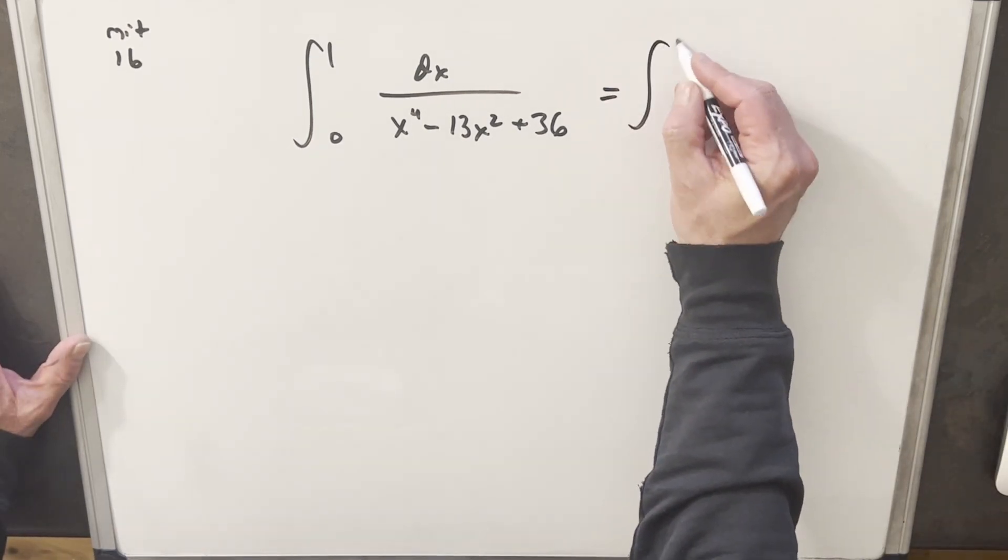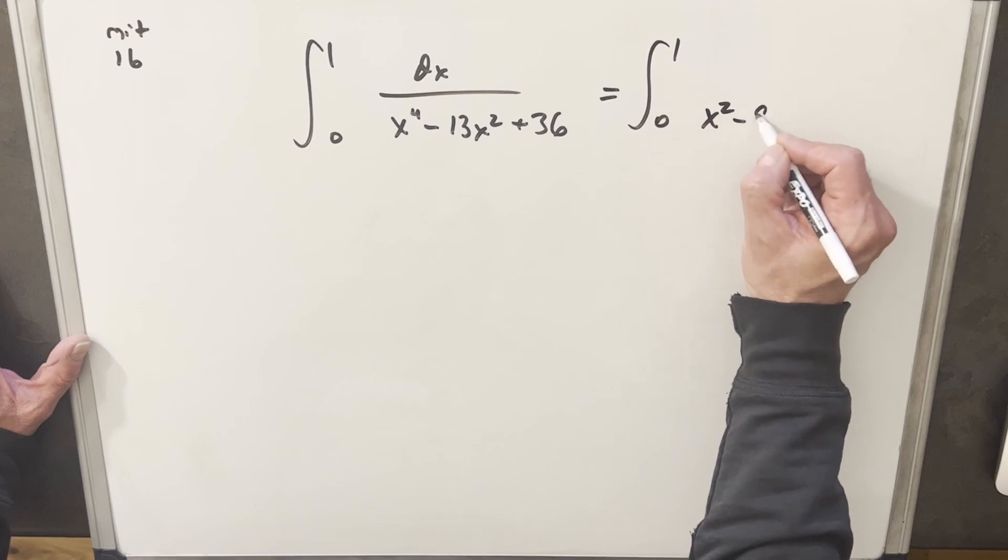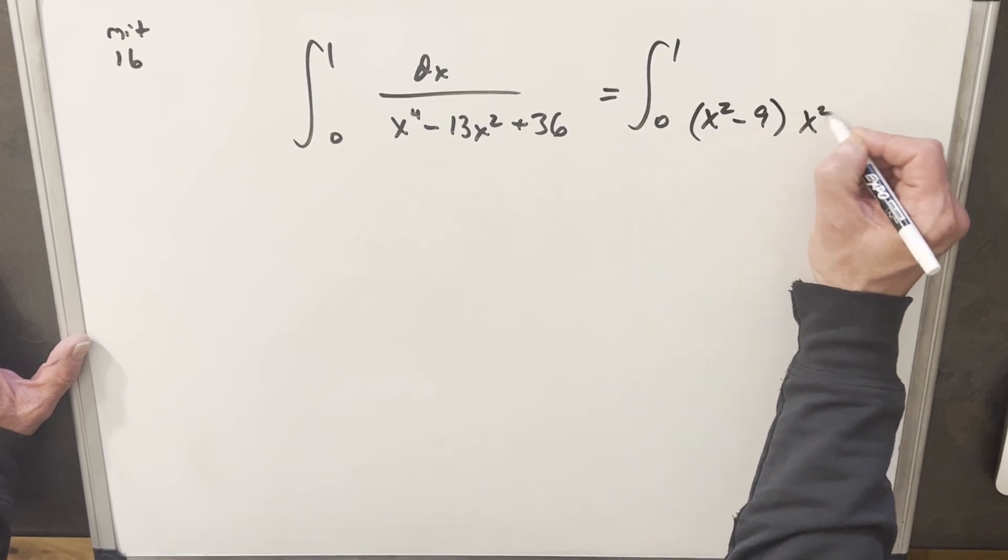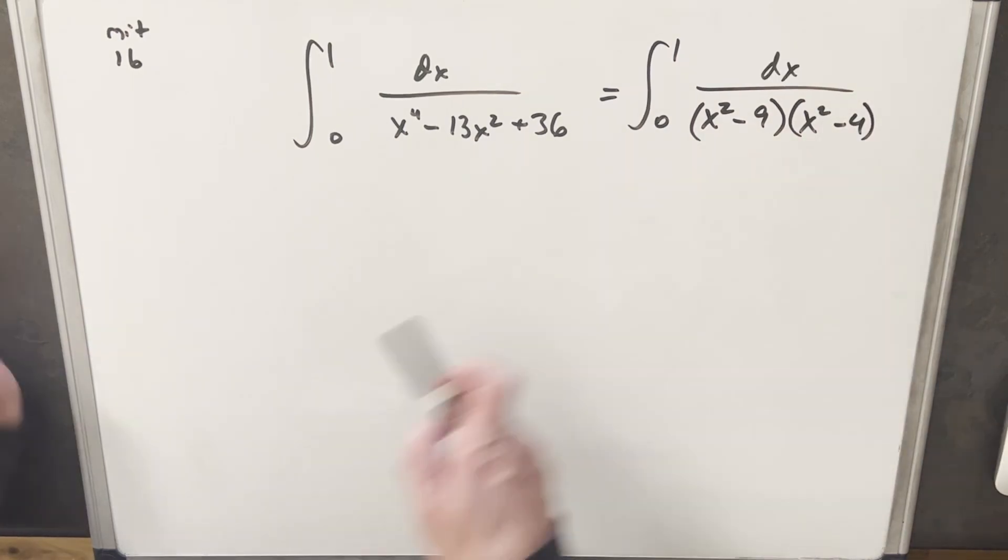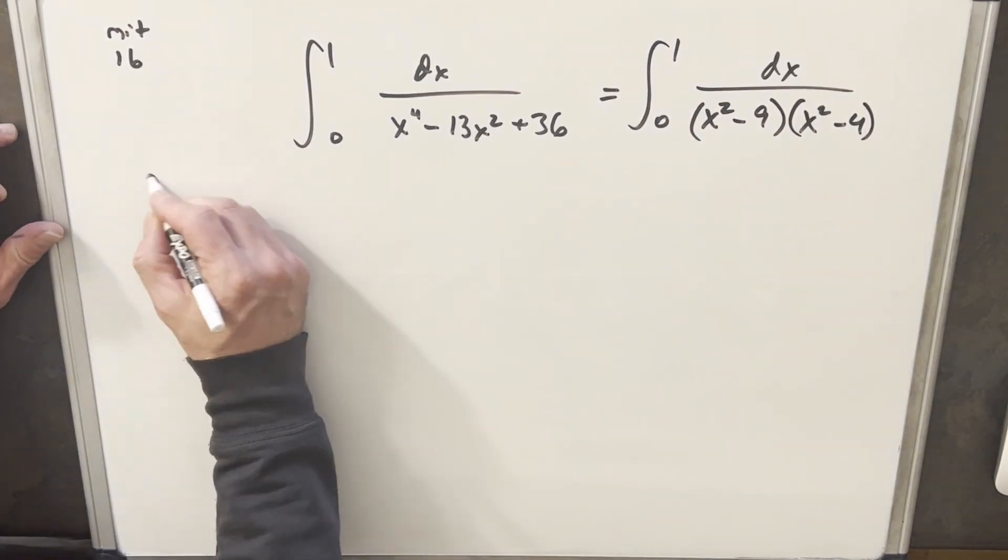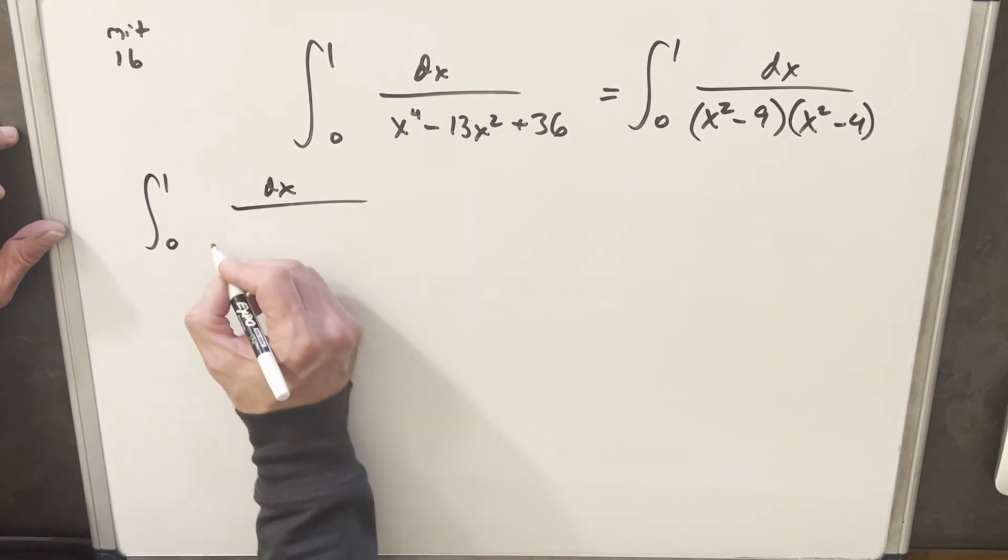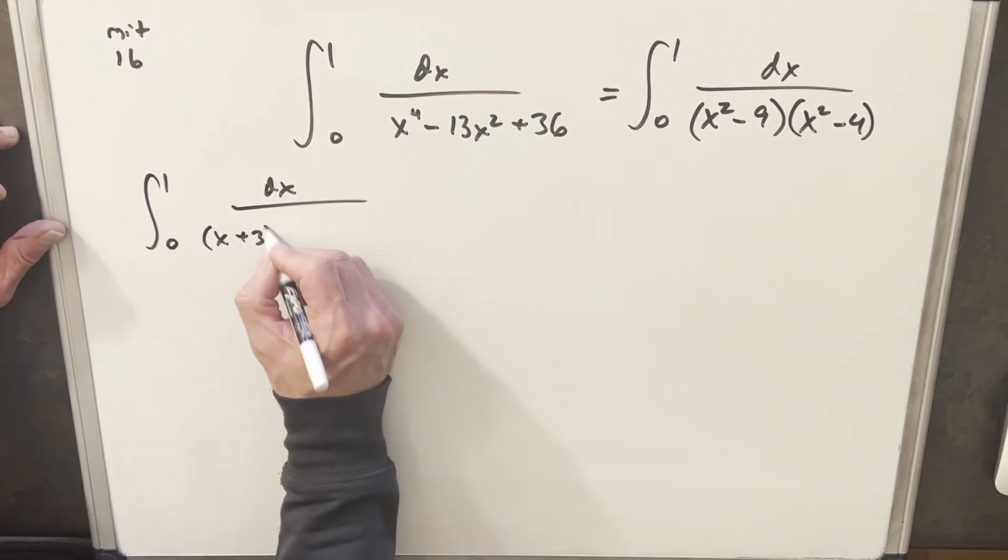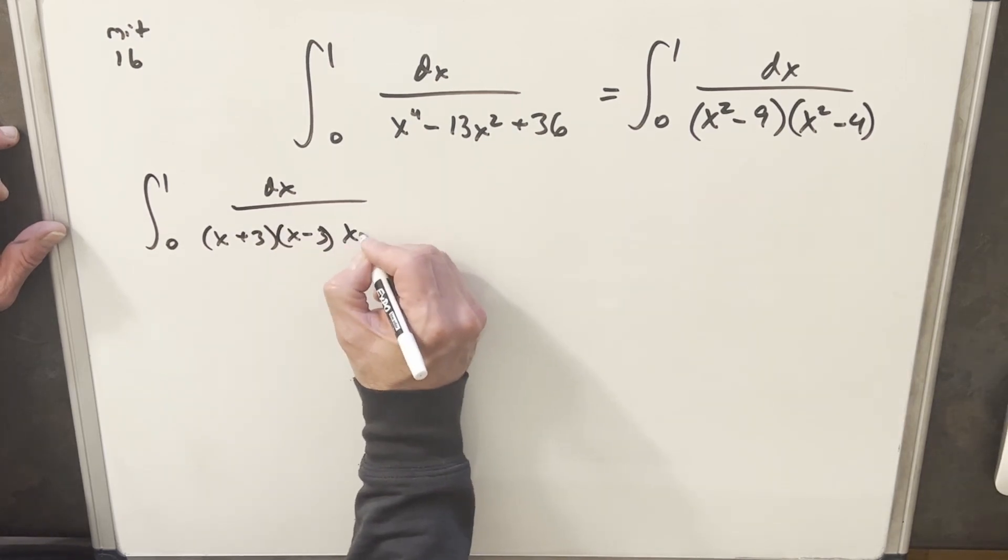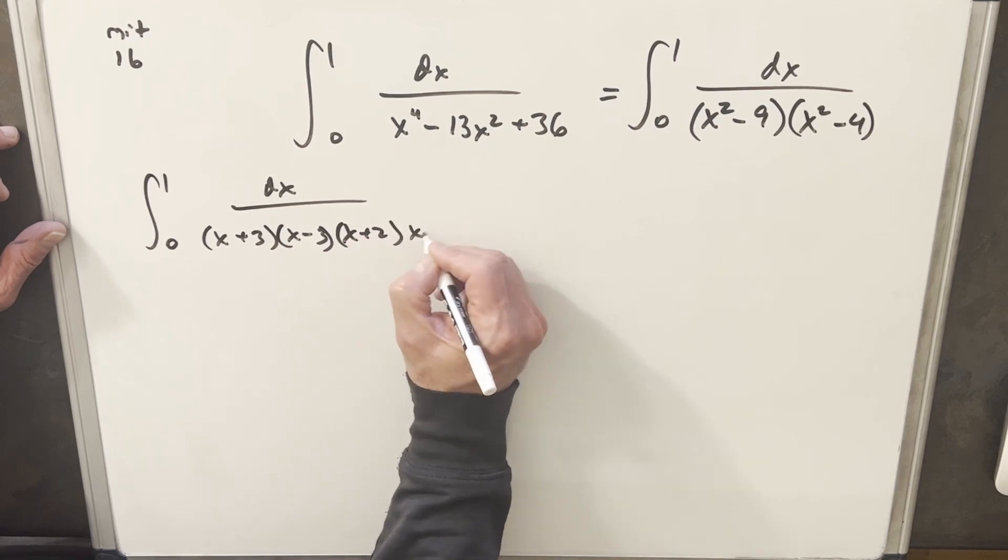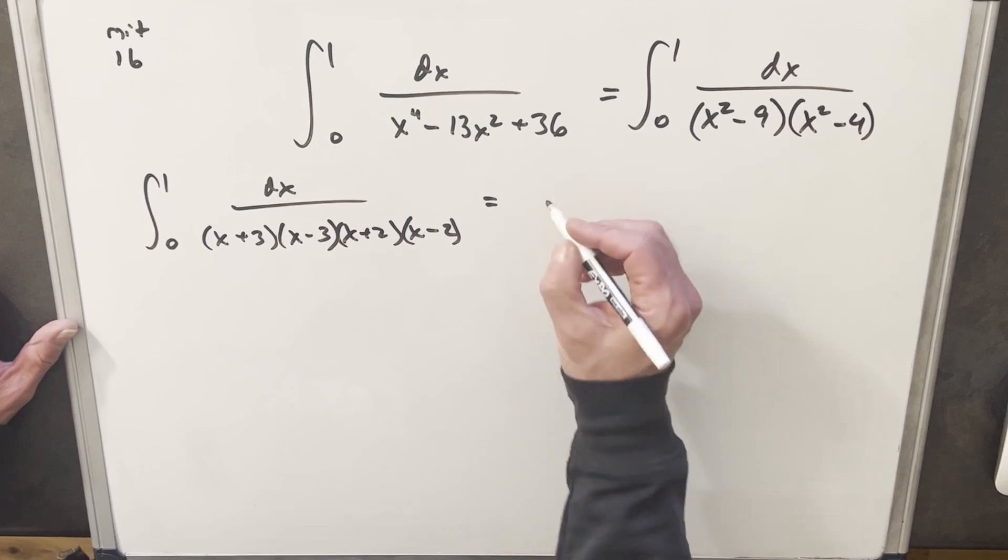So to start factoring this out, we'll keep our bounds, but now this can be factored as x squared minus 9 times x squared minus 4, but the nice thing here is we can break this up again with difference of two squares, so let's rewrite it again. So we'll write x squared minus 9 as x plus 3 times x minus 3, and we'll write x squared minus 4 as x plus 2 times x minus 2. Because we don't have any square terms, I think it's gonna make the partial fractions a little nicer.